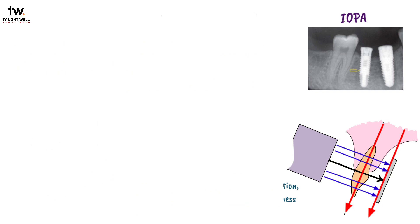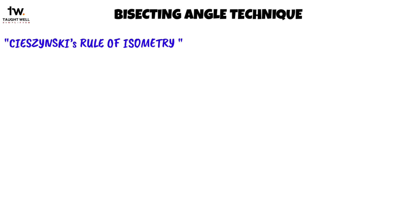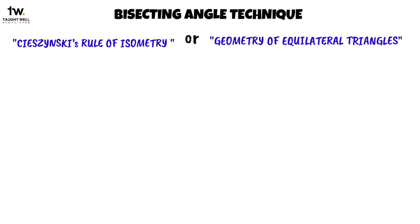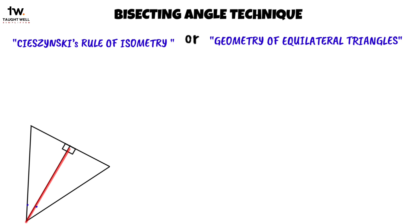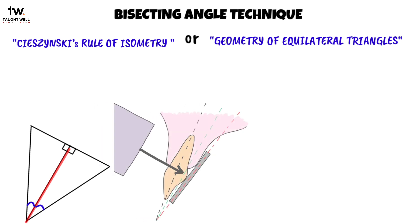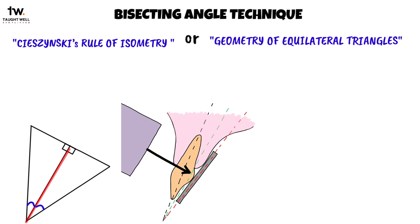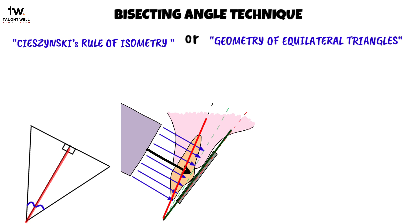The bisecting angle technique is based on Szyzynski's rule of isometry, or the geometry of equilateral triangles. This rule states that two triangles are equal if they share a common side and two equal angles. A tooth and its projected image will be equal in length if the X-ray beam is directed at a right angle to the bisecting plane that divides the triangle formed by the long axis of the teeth and the intraoral film into two equal halves.